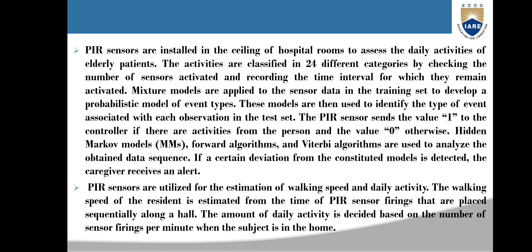PIR sensors are installed in the ceilings of hospital rooms to assess the daily activities of elderly patients. Activities are classified into 24 different categories by checking the number of sensors activated and recording the time interval for which they remain activated. Mixture models are applied to the sensor data in the training set to develop a probabilistic model of event types. These models are then used to identify the type of event associated with each observation in the test set. The PIR sensor sends the value 1 when activity from a person is detected and 0 otherwise. Hidden Markov Models, Forward algorithms, and Viterbi algorithms are used to analyze the obtained data sequence. If a certain deviation from the established models is detected, the caregiver receives an alert.